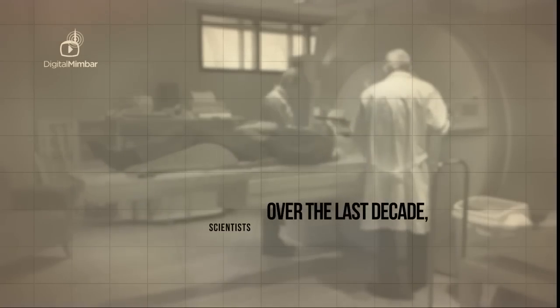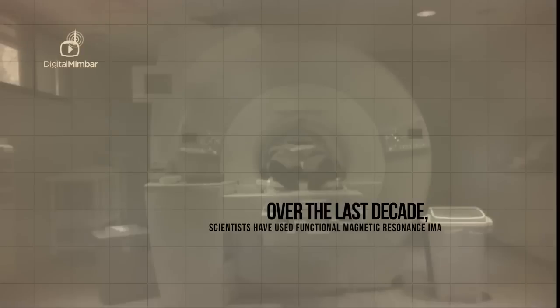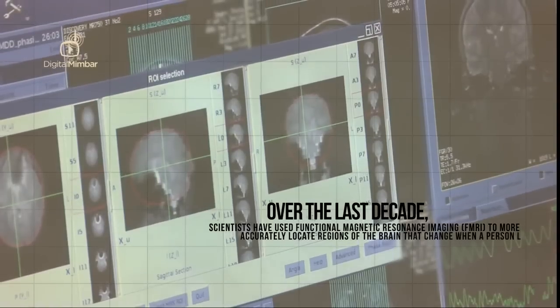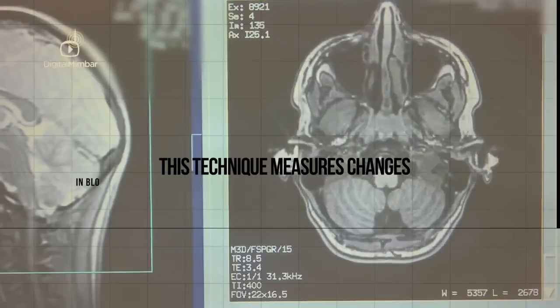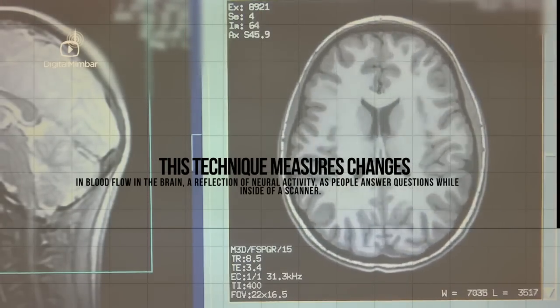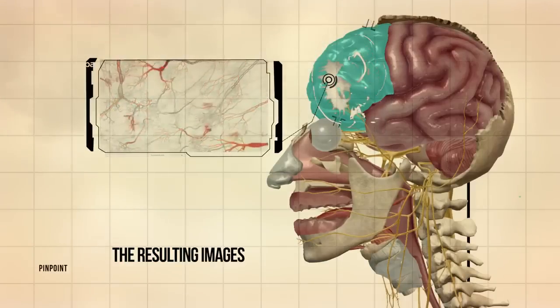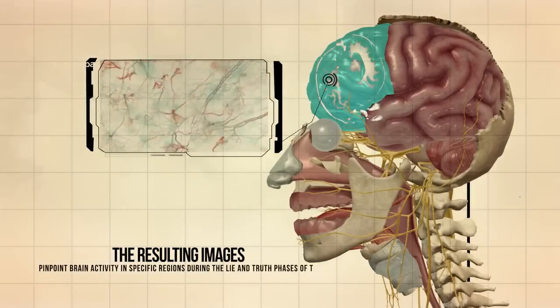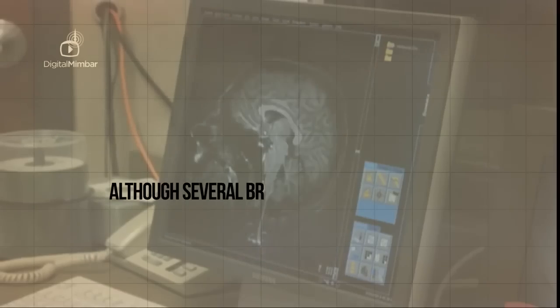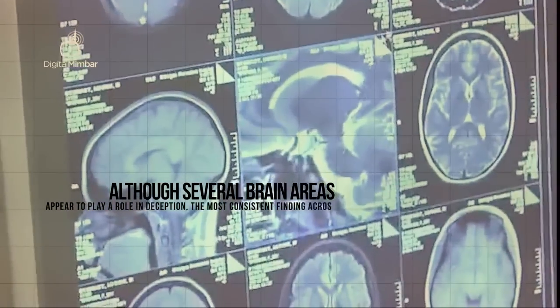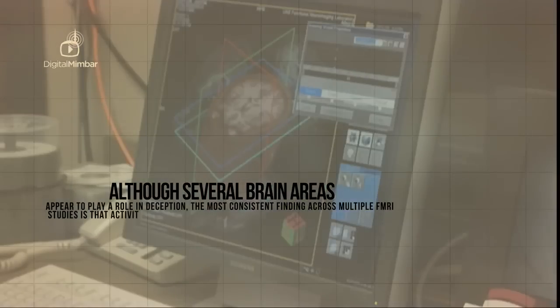Over the last decade, scientists have used functional magnetic resonance imaging to more accurately locate regions of the brain that change when a person lies. This technique measures changes in blood flow in the brain, a reflection of neural activity, while people answer questions inside a scanner. The resulting images pinpoint brain activity in a specific region during the lie and truth phases of the deception paradigms. Although several brain areas appear to play a role in deception, the most consistent finding across multiple fMRI studies is that activity in the prefrontal cortex increases when people lie.